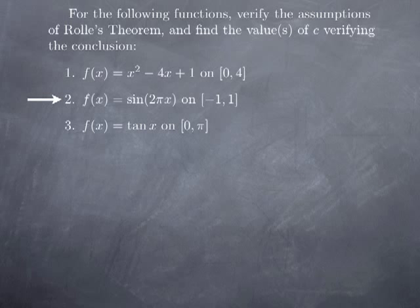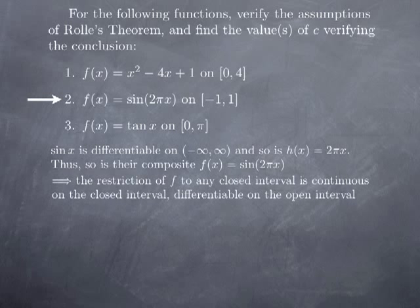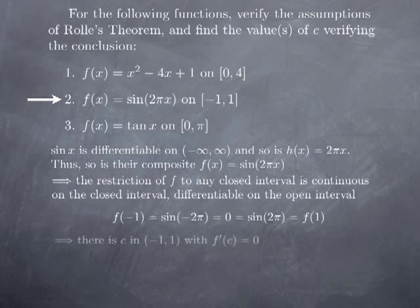Now consider f(x) = sin(2πx) on the closed interval [−1,1]. Since sin is differentiable on the real line and so is the linear function x↦2πx, their composite sin(2πx) is differentiable everywhere. By restriction to the interval, the first two assumptions are satisfied. For the third condition: f(−1) = sin(−2π) = 0 and f(1) = sin(2π) = 0, so the endpoint values are equal. Therefore Rolle's Theorem applies, guaranteeing at least one value in (−1,1) where the derivative is zero.